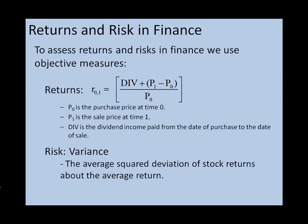In finance, to assess returns and risks, we use objective measures that can be calculated in spreadsheets. To calculate returns between time 0 and time 1, we're going to look at the following formula. Dividends that are paid on the stock between time 0 and time 1, plus the value of the stock at time 1, minus the value at time 0, all divided by the price at time 0. That's going to give us the return on the stock between time 0 and time 1.